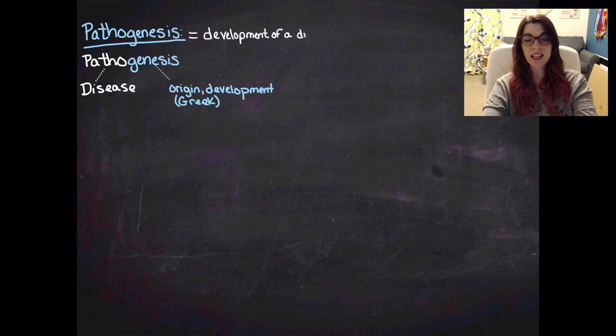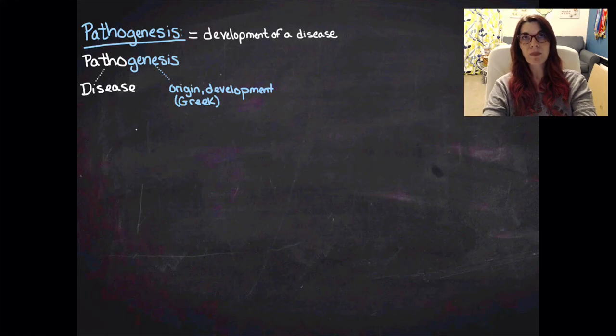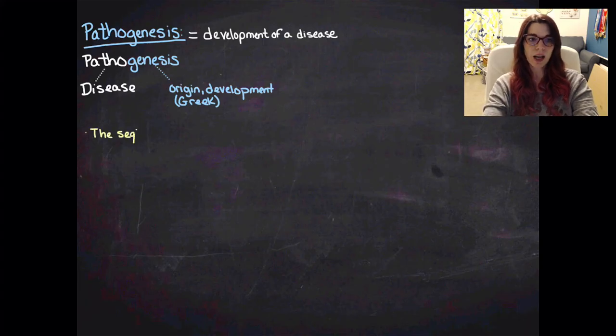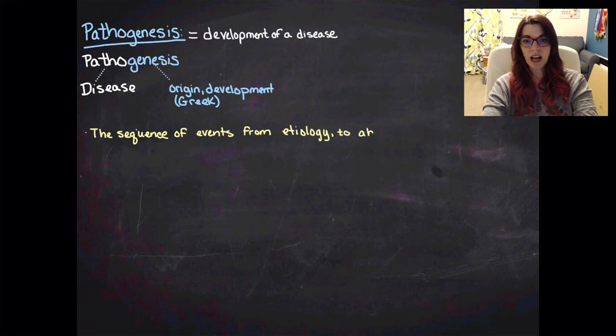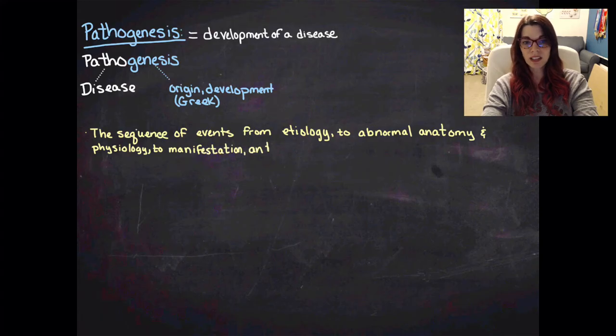So it actually means the development of a disease or kind of how a disease happens and then the process of it occurring within the body. So it's the sequence of events from etiology to abnormal anatomy and physiology to manifestation and finally to recovery.